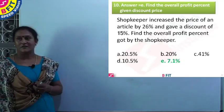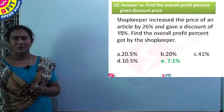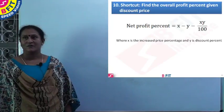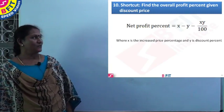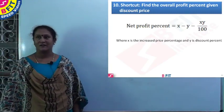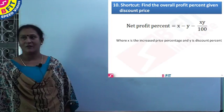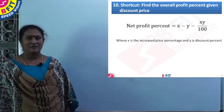So the answer is option E, 7.1 percent. So here the net profit percent is found by X minus Y minus XY by 100, where X is the increased price percentage and Y is the discount percentage.